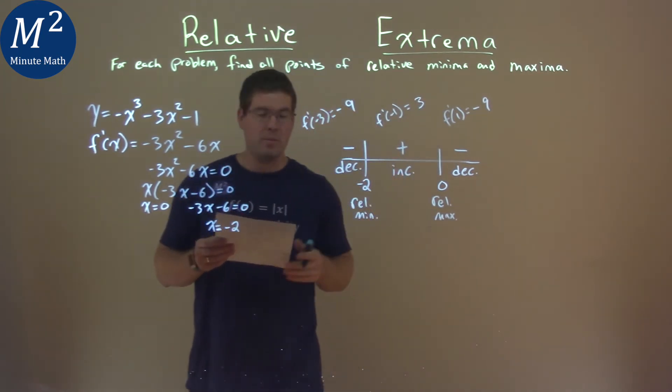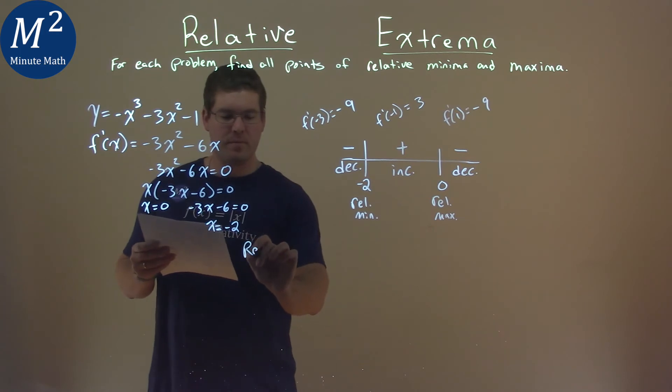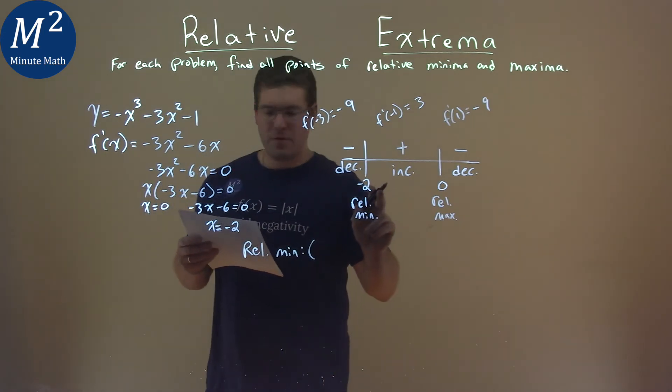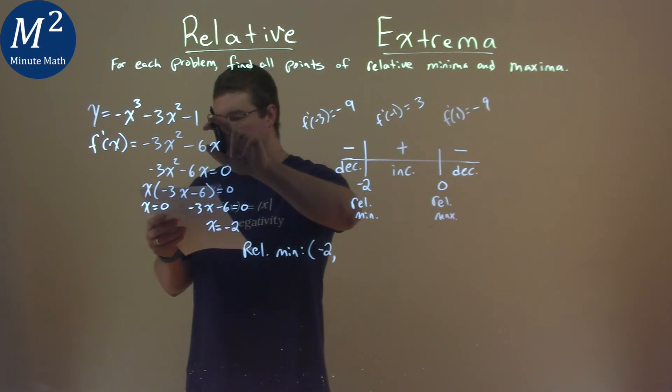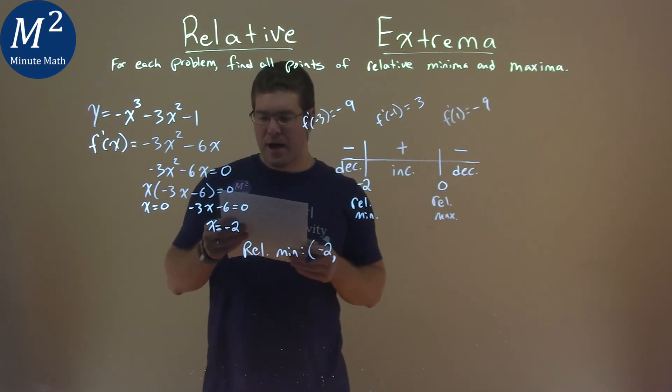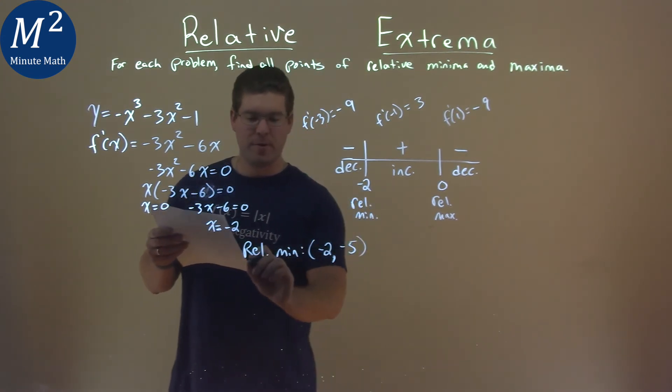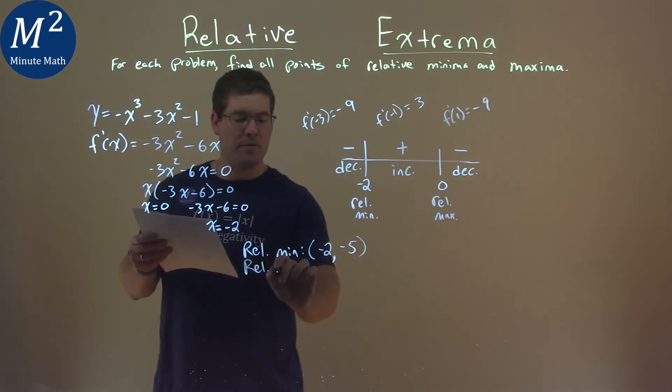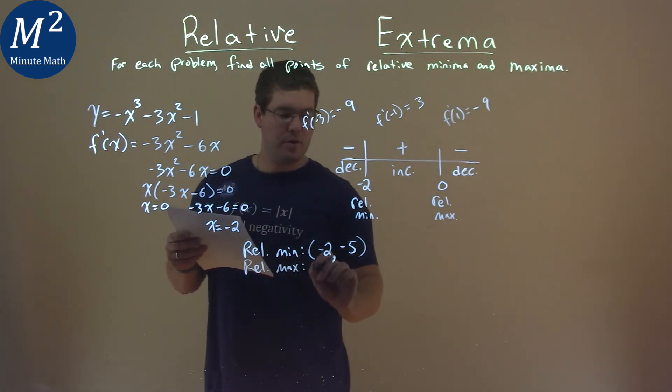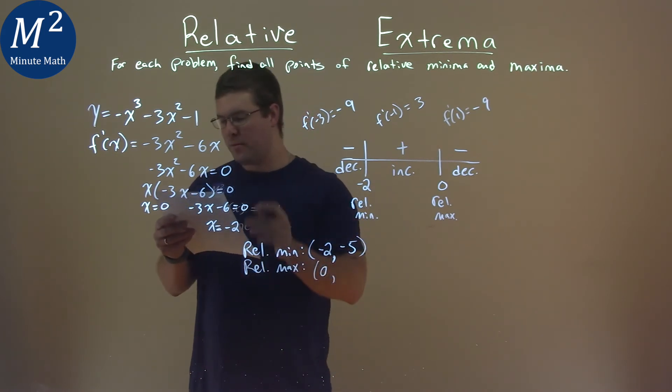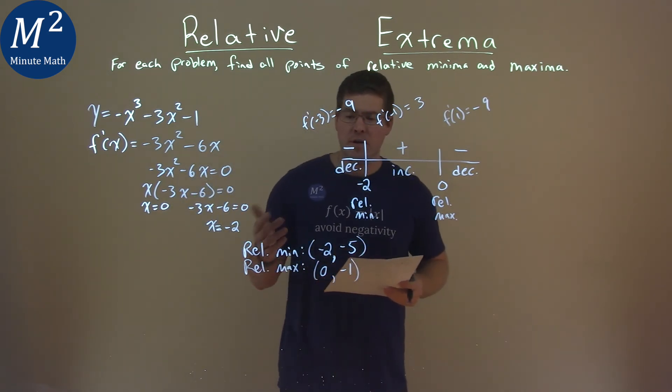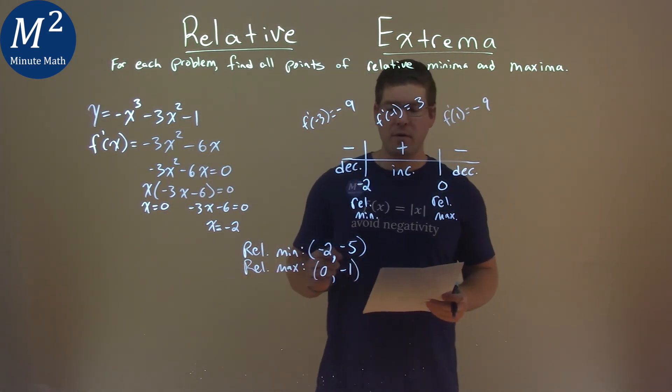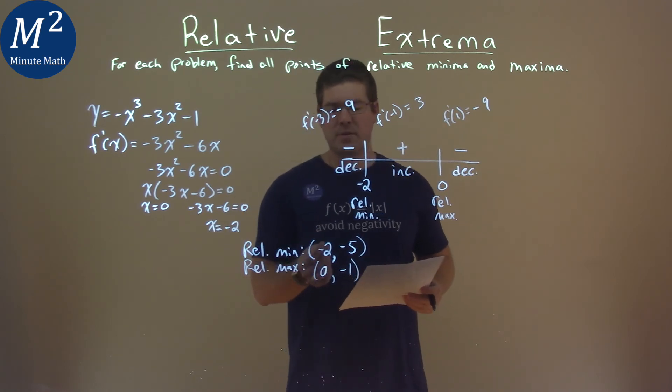We need to find the coordinate points for them. Our relative minimum: negative 2 is the x value. To get the y value, we plug it into our original function right here, and I got negative 5. For my relative maximum, 0 was the x value. We plug that into our original function, and I got negative 1 as the y value. So our final answer is a relative minimum at negative 2 comma negative 5, and a relative maximum at 0 comma negative 1.